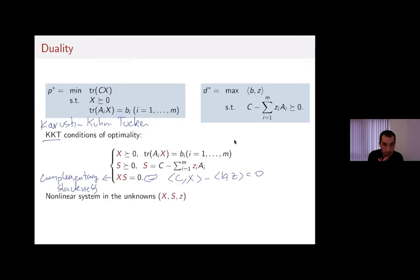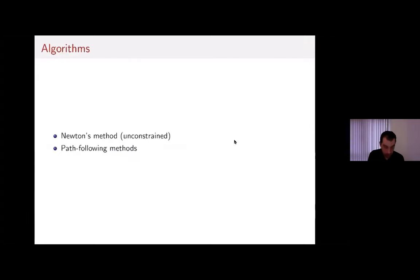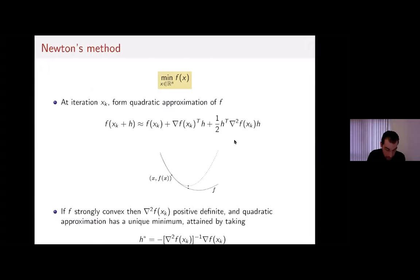I'll now discuss algorithms — specifically Newton's method and interior point methods. Newton's method is the main idea behind path-following interior point methods. It applies to unconstrained problems: minimize a convex function f where x ranges over ℝⁿ.